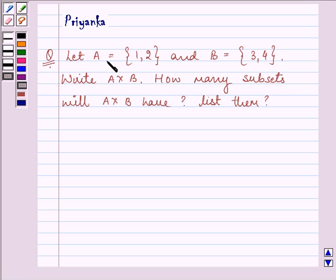It states, if set A has elements 1 and 2 and set B has elements 3 and 4, write A cross B. How many subsets will A cross B have? List them.